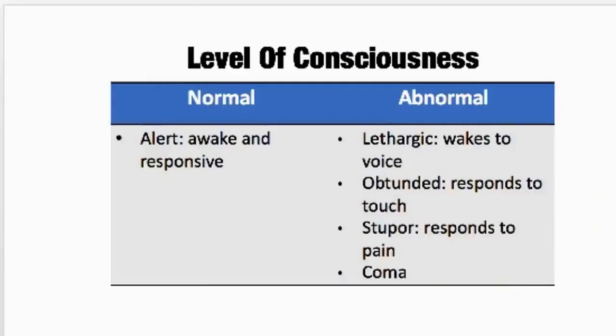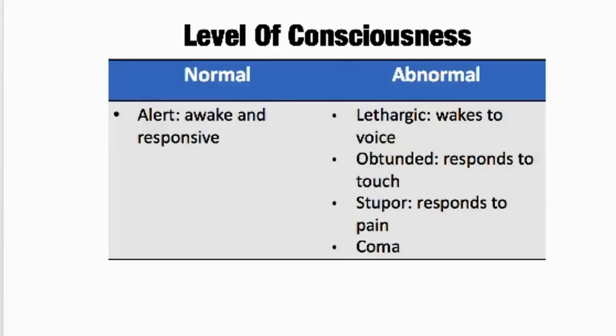When we go to level of consciousness, normally patients should be awake and responsive — that's your normal level of consciousness. Abnormal signs are going to be lethargic, obtunded, stupor, and coma. I like to think of it this way: lethargic, they wake to the voice; obtunded, they respond to touch, they arouse to touch; stupor, they respond to pain, requiring painful stimuli; and coma, they don't respond.